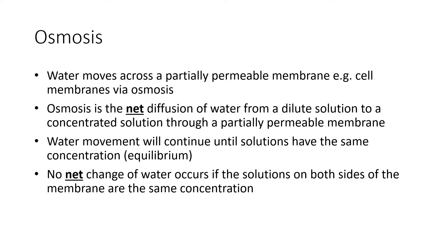For a really good answer, you can replace 'dilute solution' with 'high water concentration', and for an excellent answer replace it with 'high water potential'. On the other side, replace 'concentrated solution' with 'low water concentration' or 'low water potential'. You also need to mention it's through a partially permeable membrane. Just like all types of diffusion, we talk about net movement because some things will be going in opposite directions, but the majority will be going one way. This continues until equilibrium is reached, where the concentrations are equal on both sides of the partially permeable membrane, and the rate of movement is the same in both directions — hence no net change.